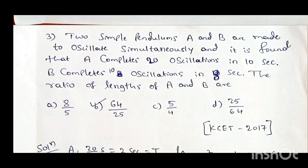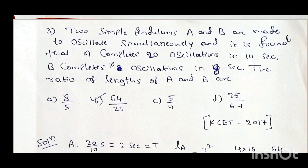Third question: two simple pendulums A and B are made to oscillate simultaneously. It is found that A completes 20 oscillations in 10 seconds, and B completes 10 oscillations in 8 seconds. The ratio of lengths of A and B is: option A 8/5, option B 64/25, option C 5/4, option D 25/64.